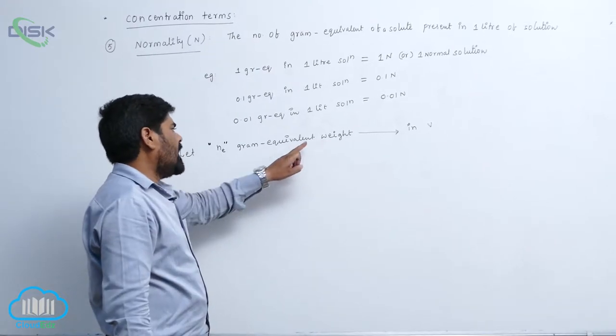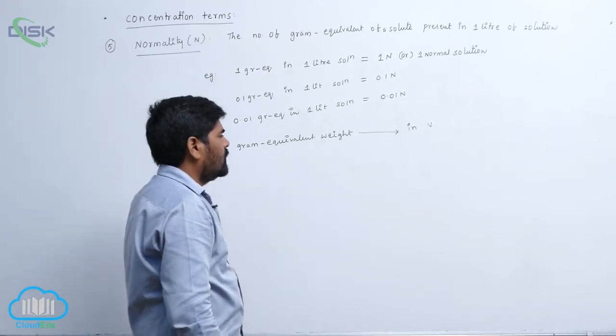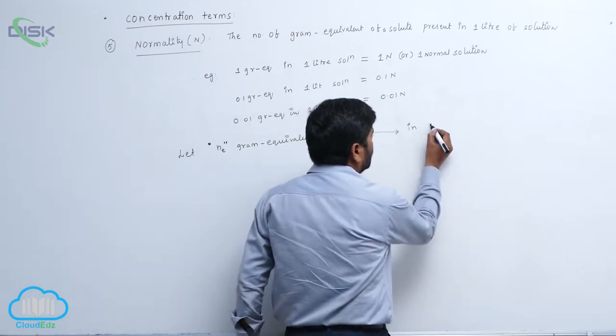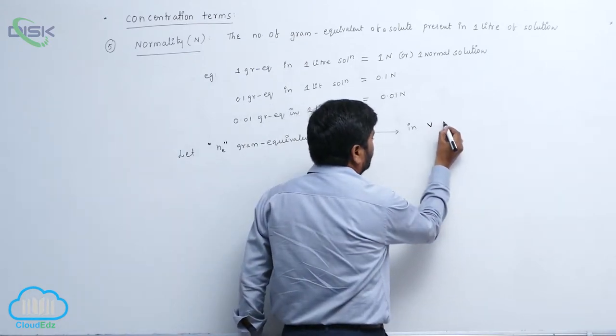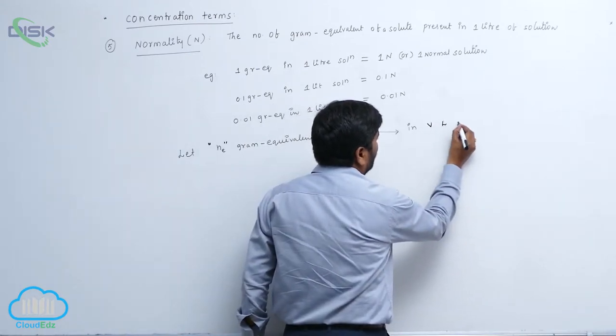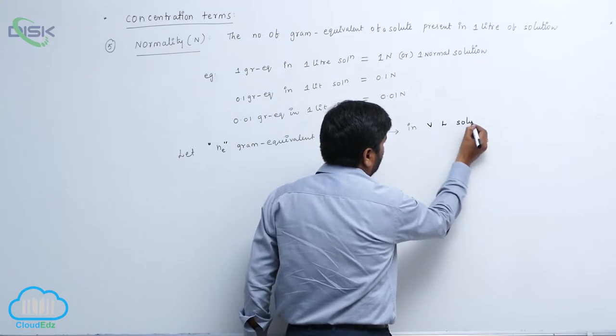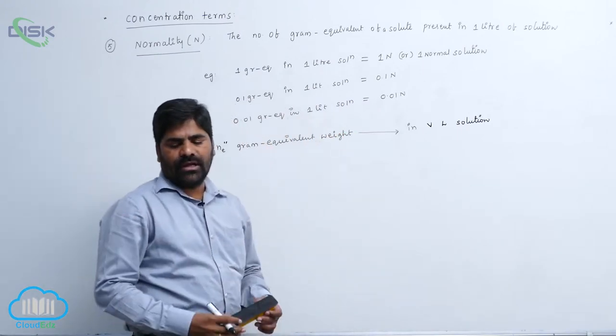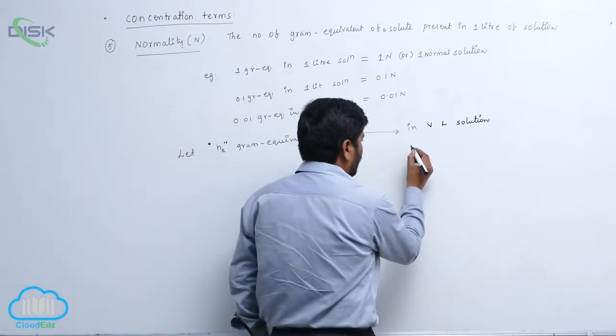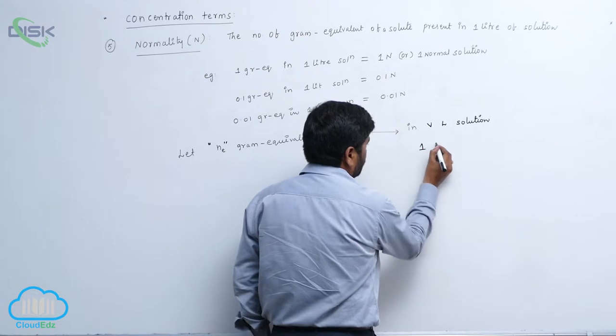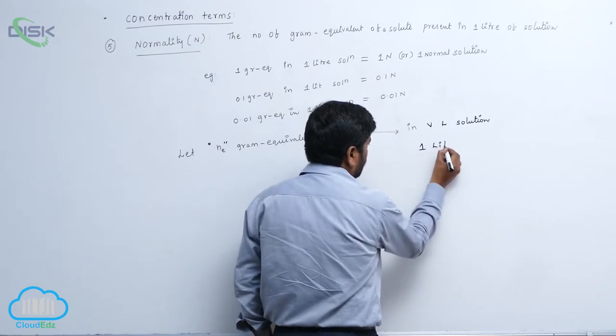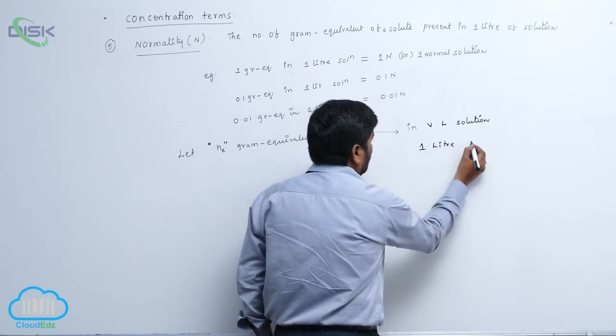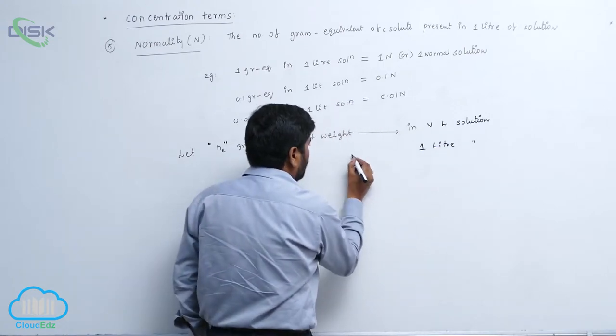Any gram equivalent weight in V litre solution, and in 1 litre solution, 1 litre solution contains how much?